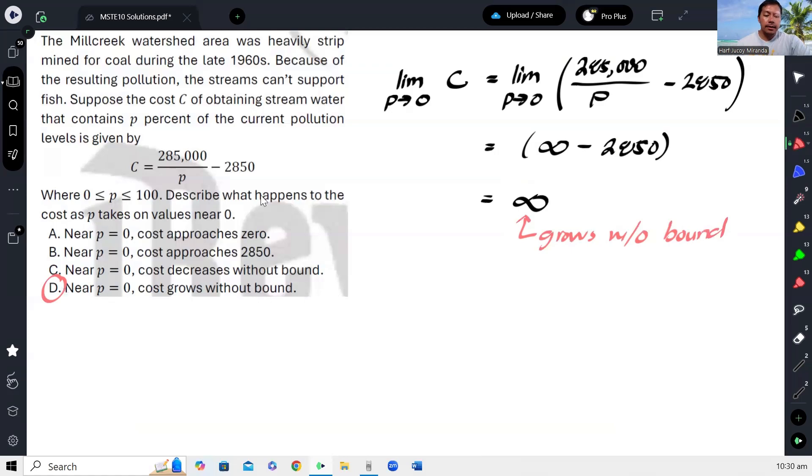But if you think about it carefully, what does this equation mean? This equation gives the cost of obtaining stream water with respect to the percentage of pollution. So, that means when our percentage of pollution is almost 0, it appears the cost is increasing. That's the idea.